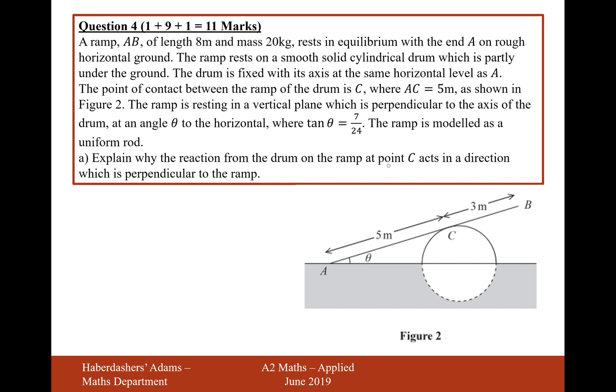Explain why the reaction from the drum on the ramp at point C acts in a direction which is perpendicular to the ramp. So that means there's a reaction force here. The answer is that because there's no friction on the drum and the beam, there's no horizontal or parallel force to the plane, so therefore it's just perpendicular.